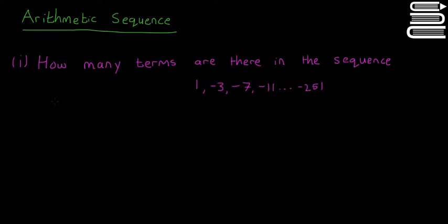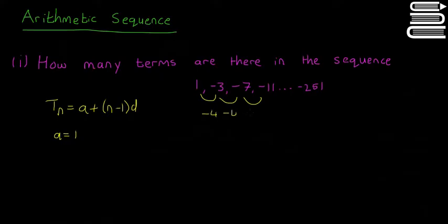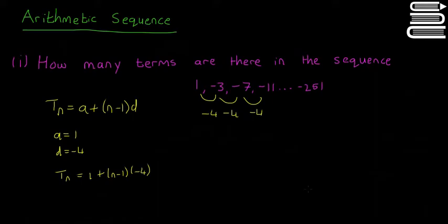So we write: t(n) = a + (n − 1) × d. In this case, a = 1, because that's the first term. The difference between each number is minus 4: from 1 to minus 3 is minus 4, from minus 3 to minus 7 is minus 4, from minus 7 to minus 11 is minus 4. So d = minus 4. That means t(n) = 1 + (n − 1) × (−4).